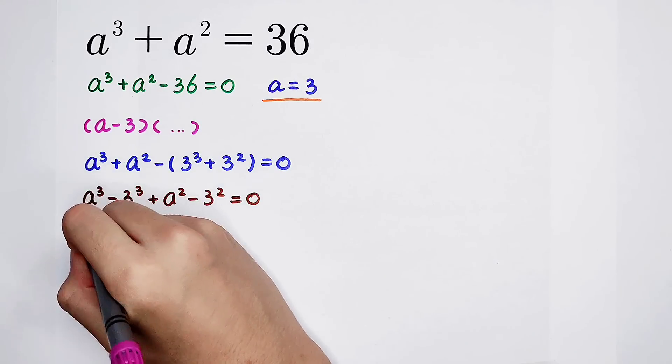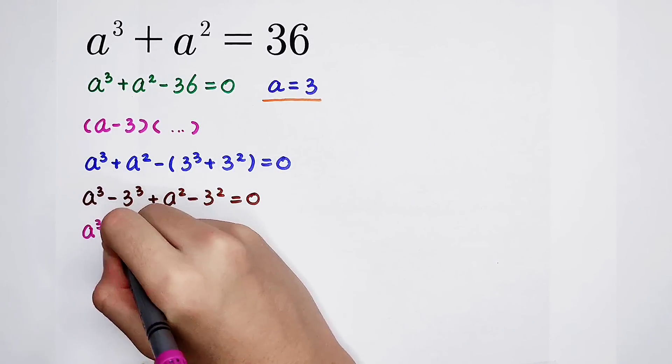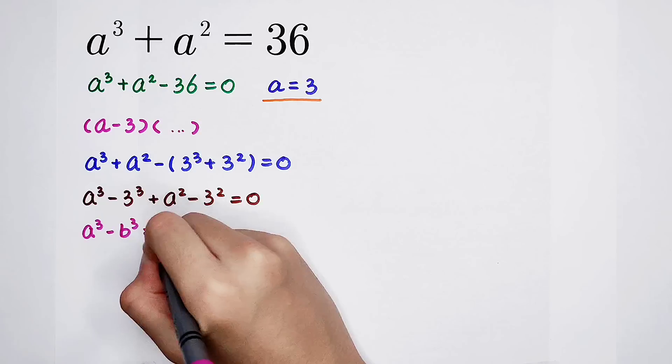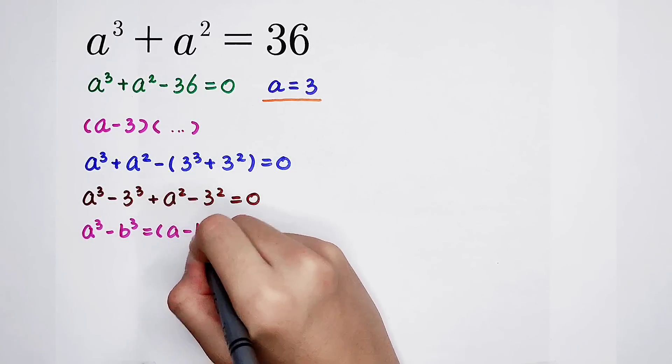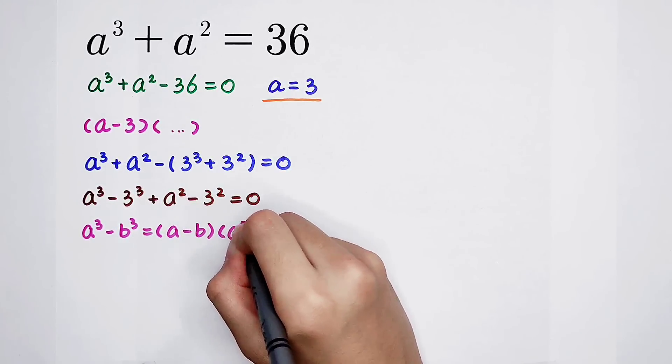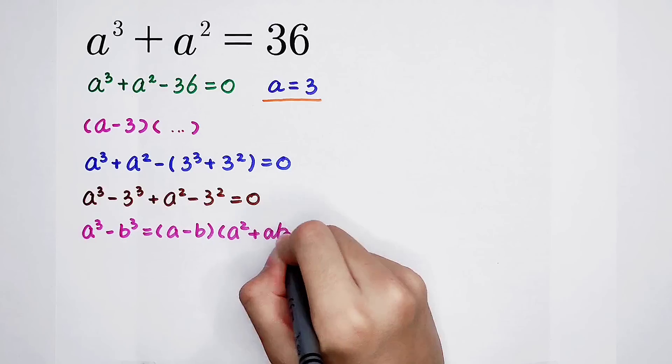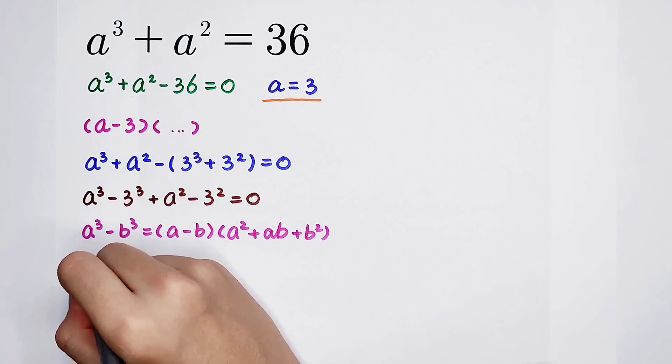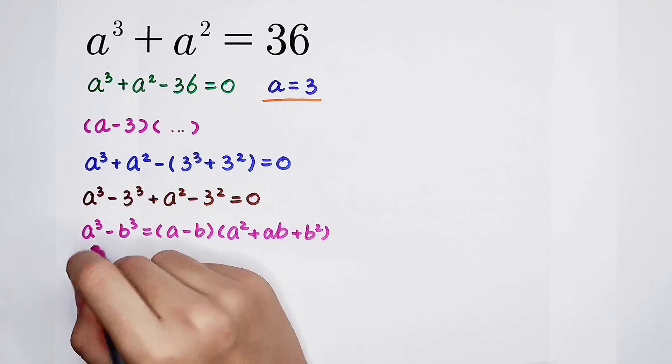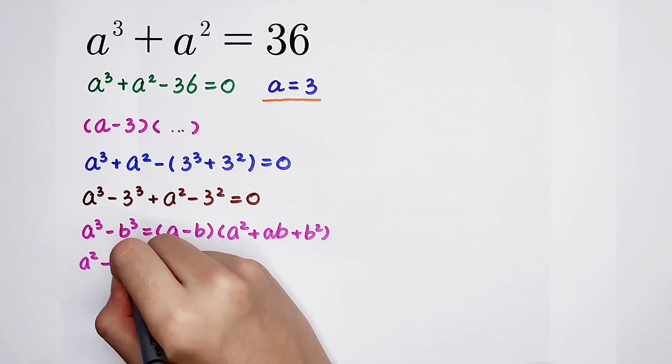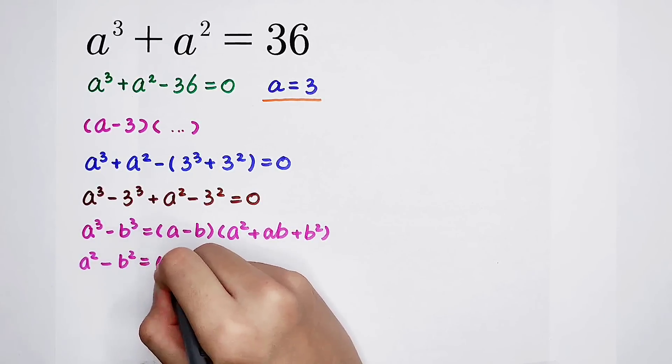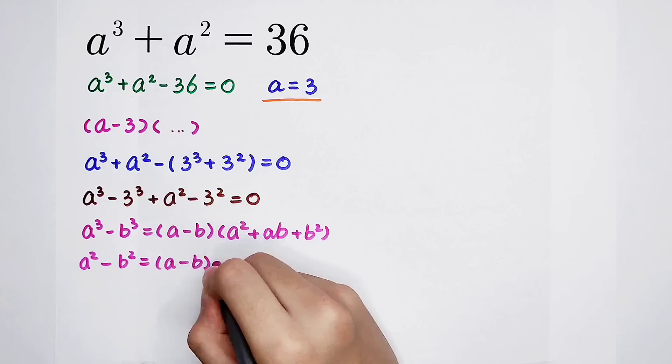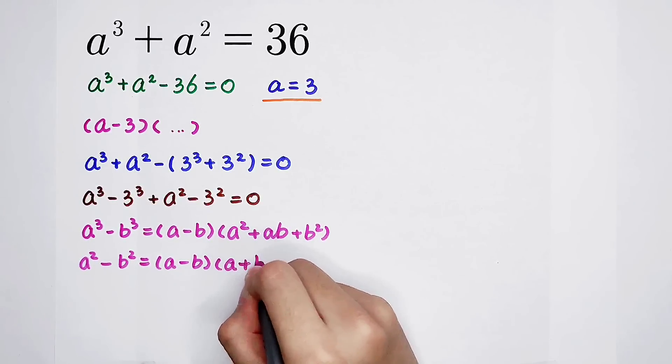Now I need a formula. a cubed minus b cubed equals (a minus b) times (a squared plus ab plus b squared). The other formula: a squared minus b squared equals (a minus b) times (a plus b).